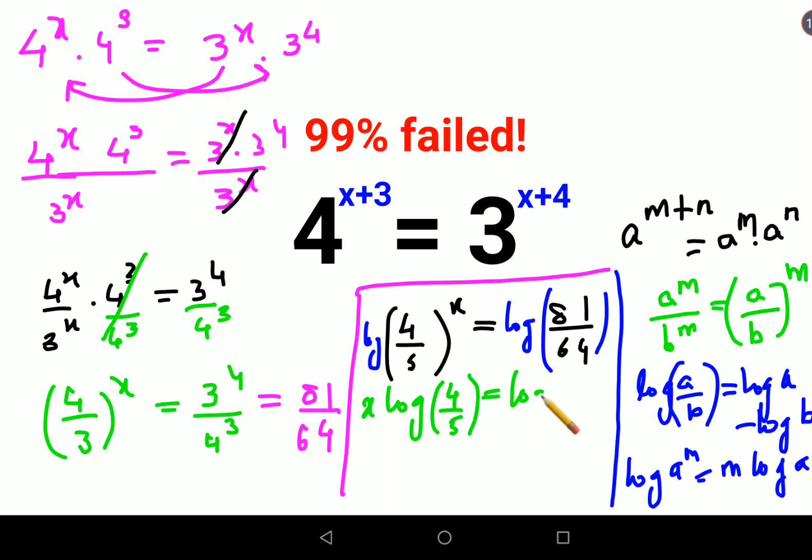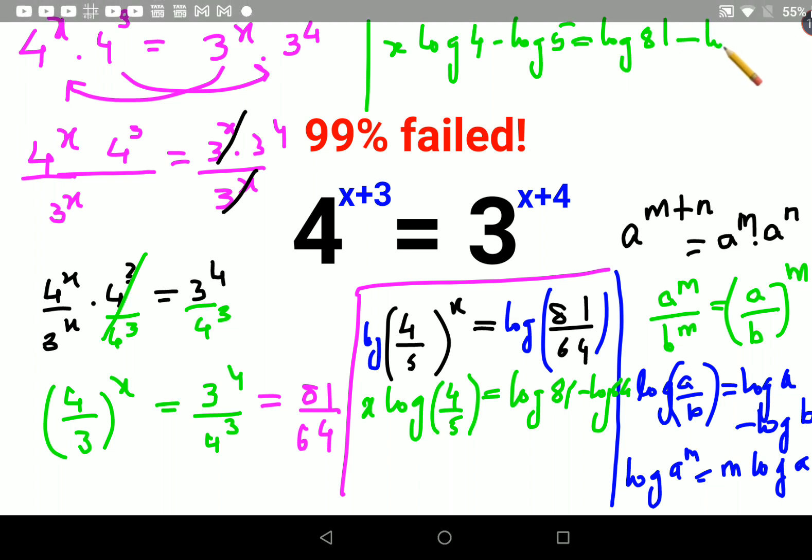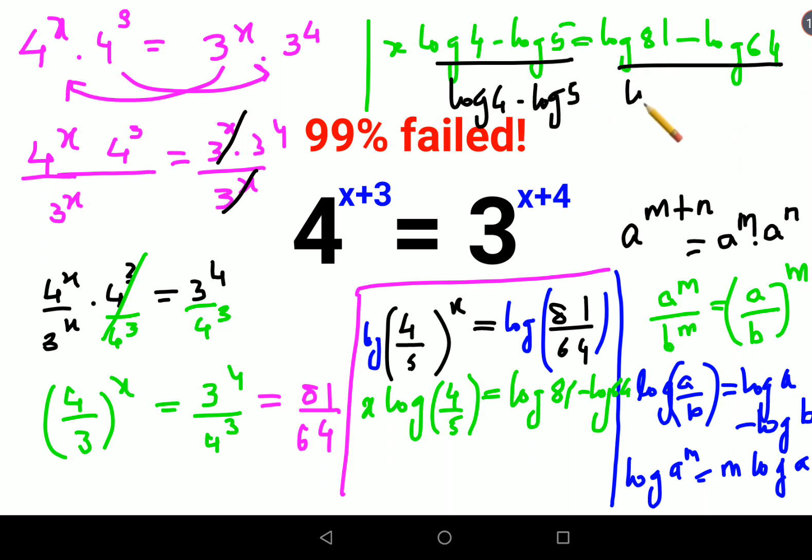And this looks like log 81 minus log 64. So now what we can do over here is x will remain as it is. And log of 4 upon 3 can be written as log of 4 minus log of 3. This equals log 81 minus log 64. Now in order to find the value of x we will divide both sides by log of 4 minus log of 3.